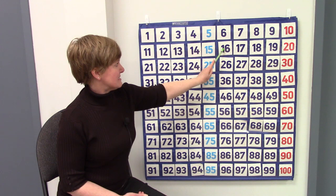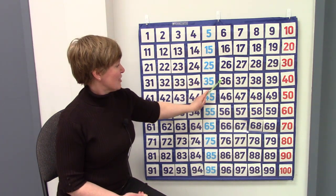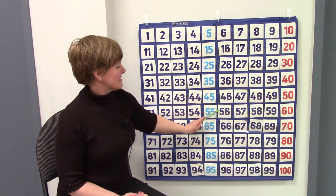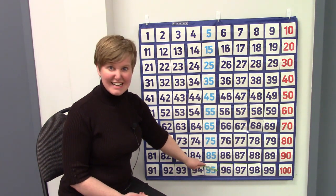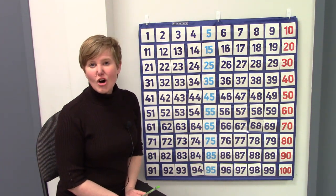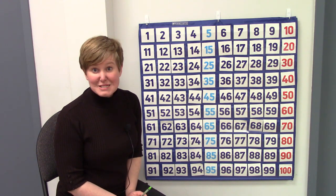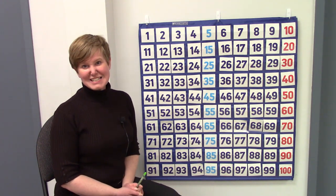We have 6, 16, 26, 36, 46, 56, 66, 76, 86, 96. All of the numbers in the ones place have a 6 at the end.